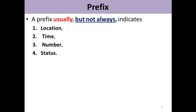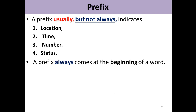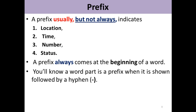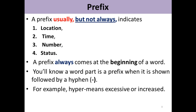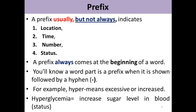What is a prefix? A prefix usually, but not always, indicates location, time, number, or status. A prefix always comes at the beginning of the word — you will know a word part is a prefix when it is shown followed by a hyphen. For example, 'hyper-' means excessive or increased, as in 'hyperglycemia,' which indicates increased sugar level in the blood.